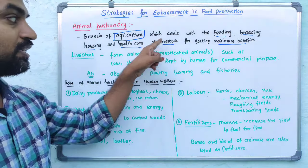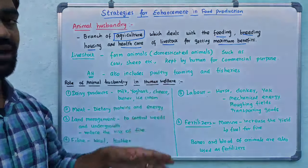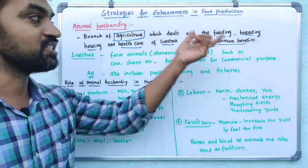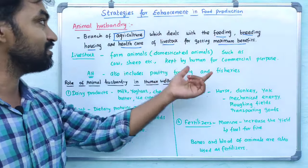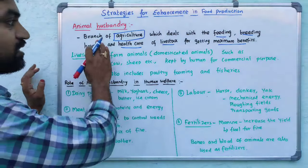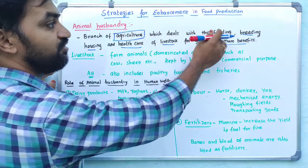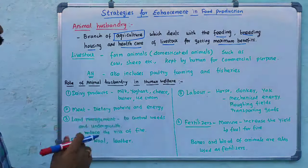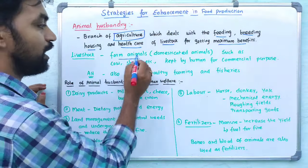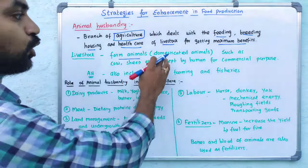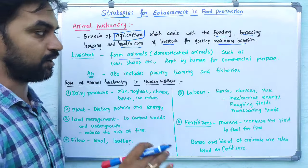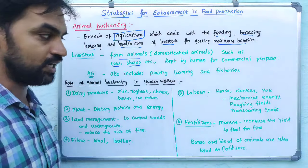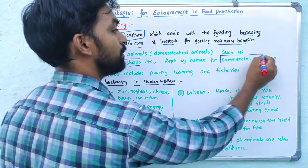Livestock is a branch of agriculture which deals with the feeding, breeding, housing and health care of livestock for getting maximum benefits. Farm animals is a branch of livestock, particularly domesticated animals such as cow, sheep and many other organisms. This is the one that has a commercial purpose.